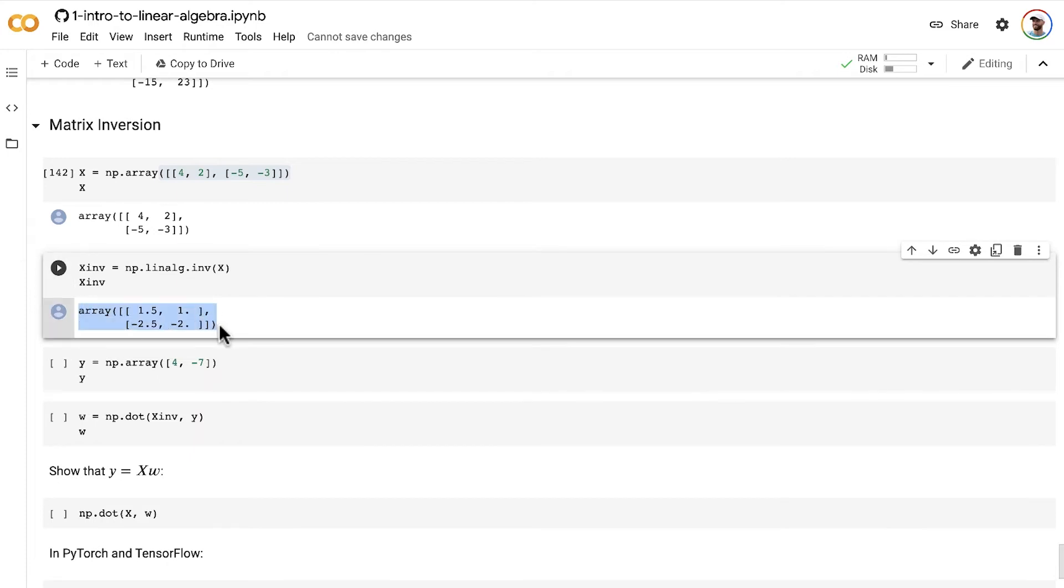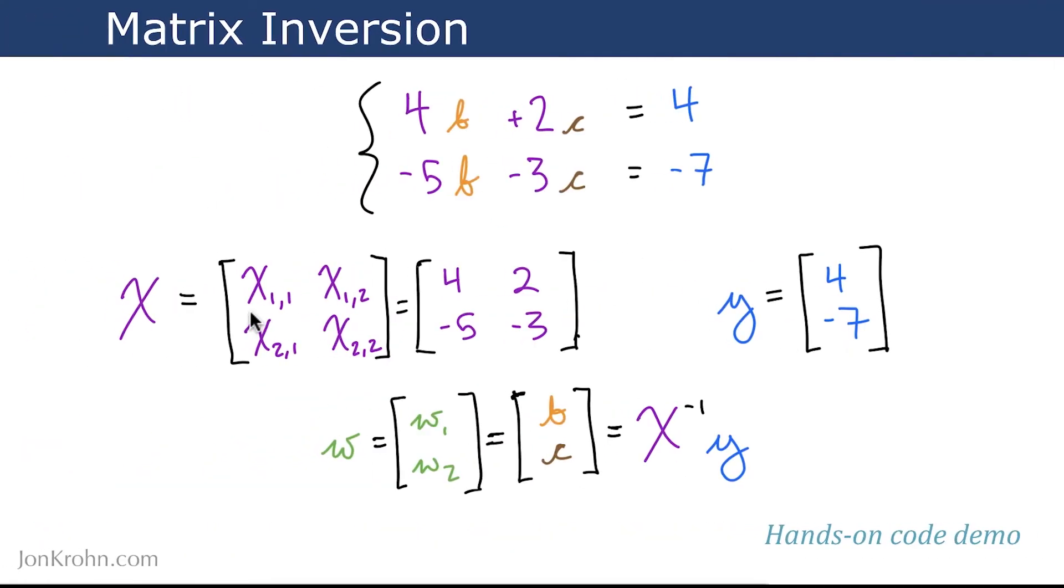And we're not going to, in this Machine Learning Foundation series, cover how to do this by hand. I'll provide other resources at the end of the second linear algebra subject if you'd like to learn how to do this by hand, but that's outside the scope of this Machine Learning Foundation series. We're just going to use built-in functions like the NumPy inverse function to automatically calculate the inverse of x. So here is the inverse of x. Now that we have it, we can, just as in this equation here, take this inverted matrix x and multiply it by our outcomes y to get our weights w.